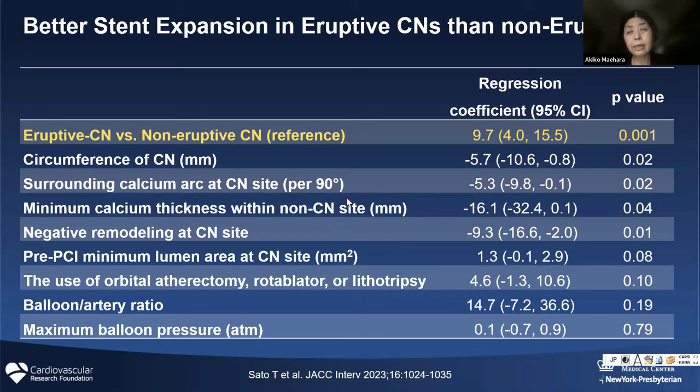How big the calcium is in the surrounding area is quite important. If the non-calcified nodule side has the same calcium, there is a good chance of calcium fracture and good stent expansion. But if not, it really indicates poor stent expansion. When talking about stent expansion in calcified nodules, the surrounding calcium is more important than the calcified nodule itself. Additionally, negative remodeling at the site of the calcified nodule also indicates poor stent expansion.